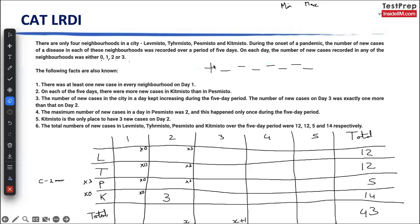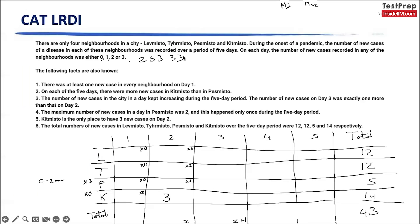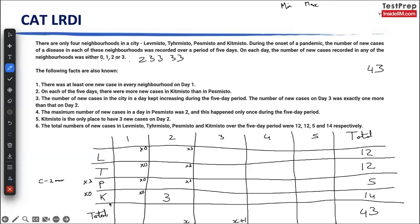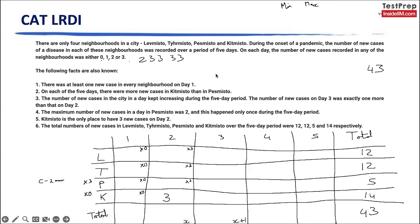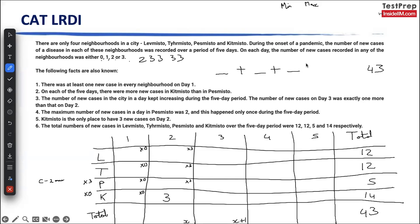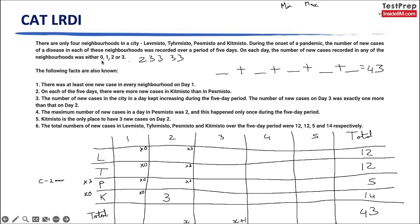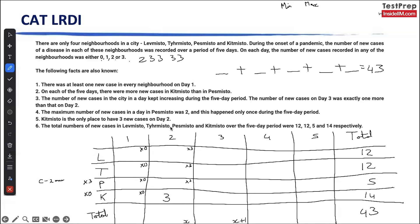Now for the city total of 43, these are additions across all four neighbourhoods across five days. Let's look at maxima and minima cases. Minima is zero, maxima for any neighbourhood per day is 3, so for four neighbourhoods that's 3 × 4 = 12 per day maximum. P cannot take the value of 3, so P's maximum daily contribution is 2, meaning the true maximum per day for the city is 11 — making 12 per day impossible.